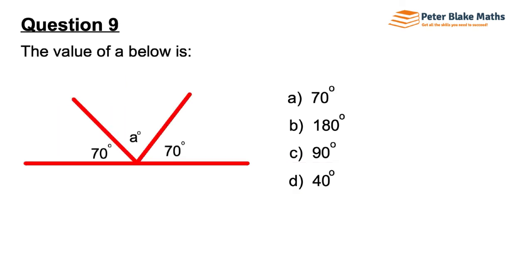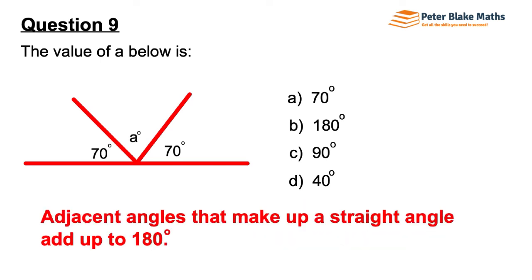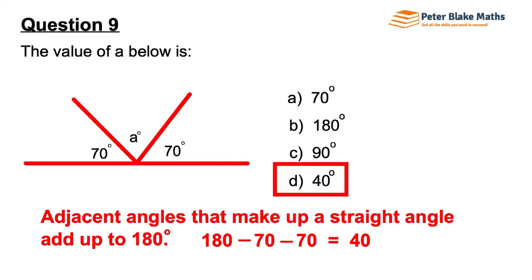Question 9. The value of A below is 70 degrees, 180 degrees, 90 degrees, or 40 degrees. The rule we're using here is that adjacent angles that make up a straight angle add up to 180 degrees. So 70 and 70 and A will equal 180 degrees. To find A, start with 180 degrees, take the 70 degrees away, take another 70 degrees away, and we're left with the A-sized angle, which would be 40 degrees.